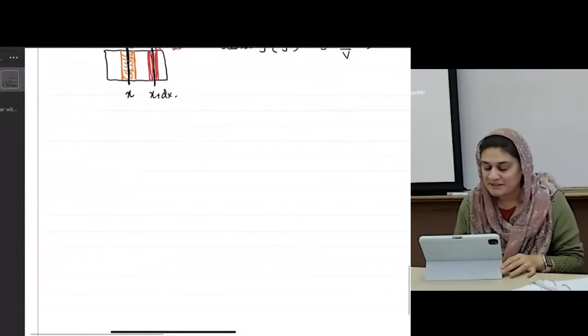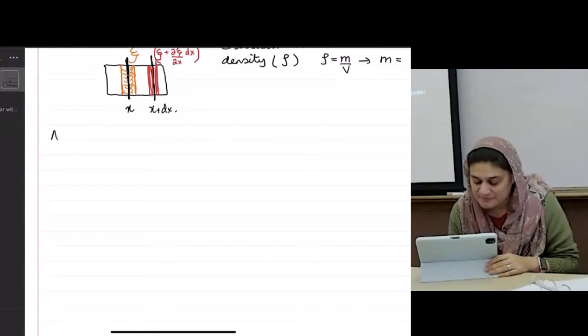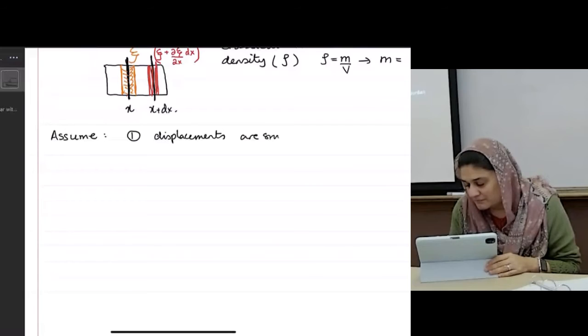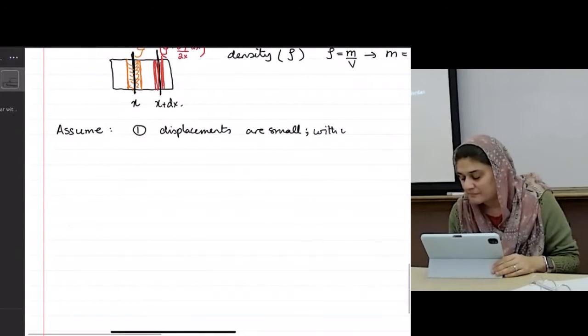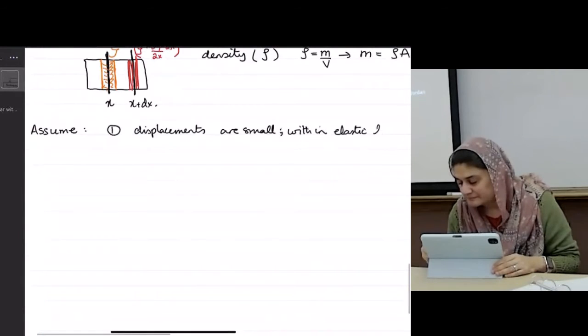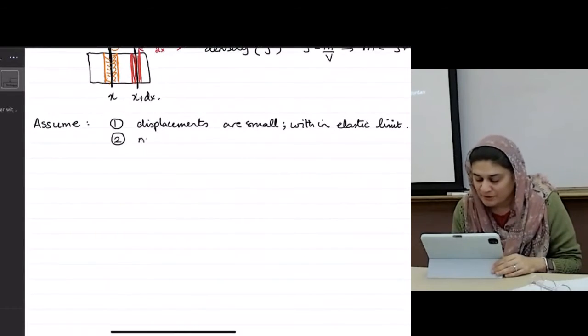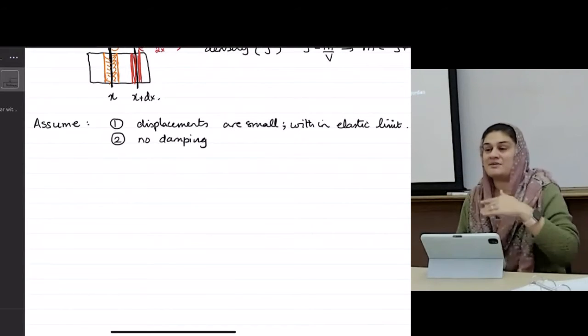So that means at my position. So I'm going to define some assumptions. Assume number one, the displacements are small, which means they are within the elastic limit. And number two, no damping. That means nothing is being damped as we move through.